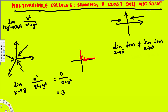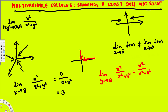Now let's look at what happens when Y approaches zero. We have x² over (x² + y²), and plugging in y = 0 gives x² over (x² + 0), which is x² over x², and that equals 1. So when Y approaches zero, the limit is 1.